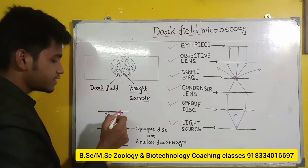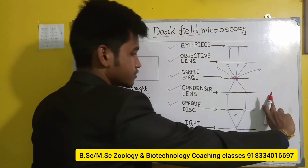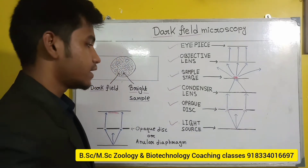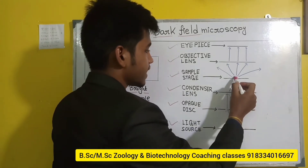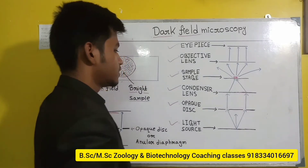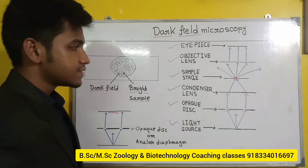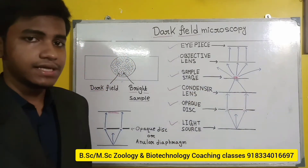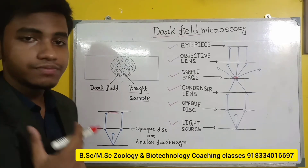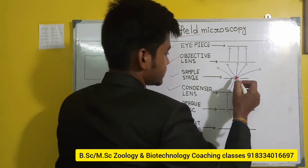Those light rays passing through the slits of the opaque disc are captured in the periphery part of the condenser lens. The condenser lens will then focus the light rays onto the sample on the glass slide.